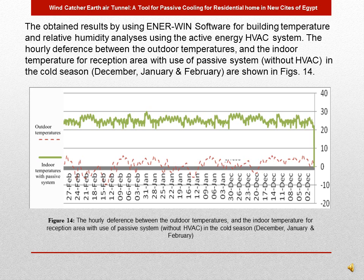The prototype contains a vertical cross-opening windcatcher for fresh air inlet and horizontal and vertical solar chimneys for hot air exhaust. The vertical solar chimney is covered by transparent photovoltaic solar collectors to increase internal air temperature and generate electricity. The horizontal solar chimney is painted black to maximize heat and drive hot exhaust from inside.